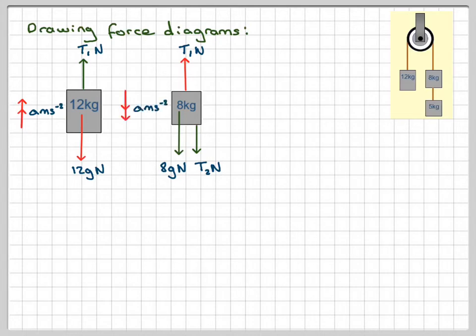And the acceleration this time is going downwards because it's going in that motion. And then for the 5 kilogram block, we've got tension T2 acting up the same as this tension here. And a 5g Newtons force acting downwards there. And of course, the acceleration is also acting downwards.